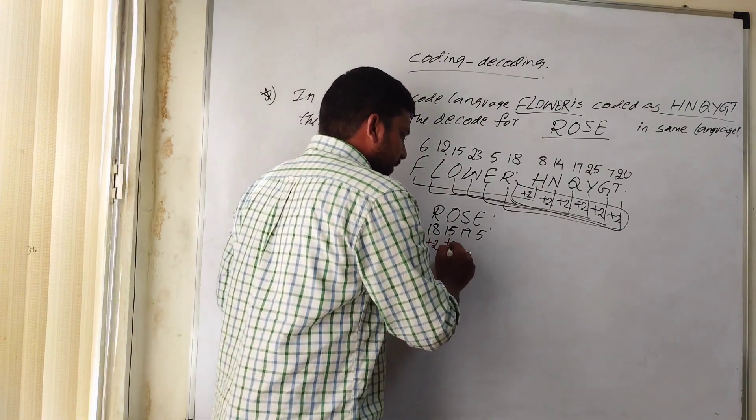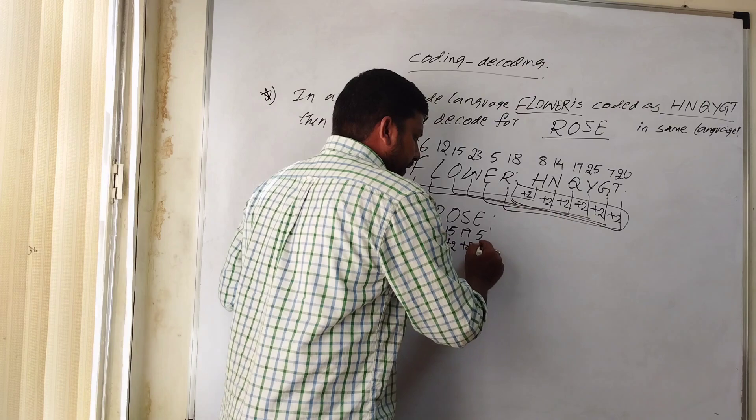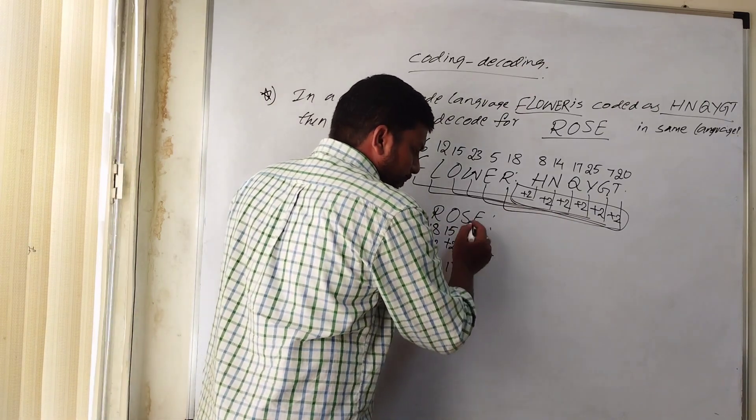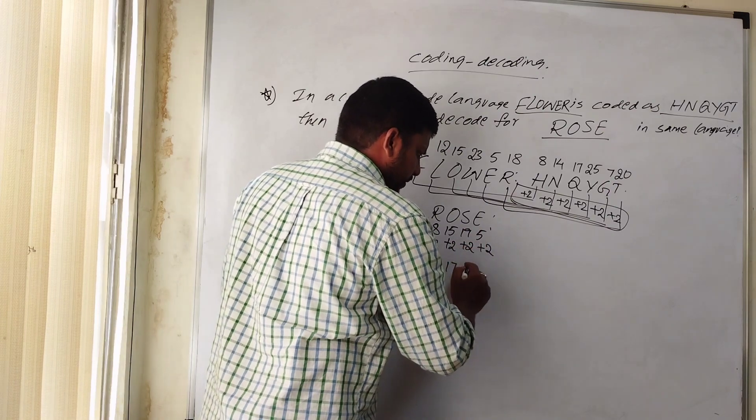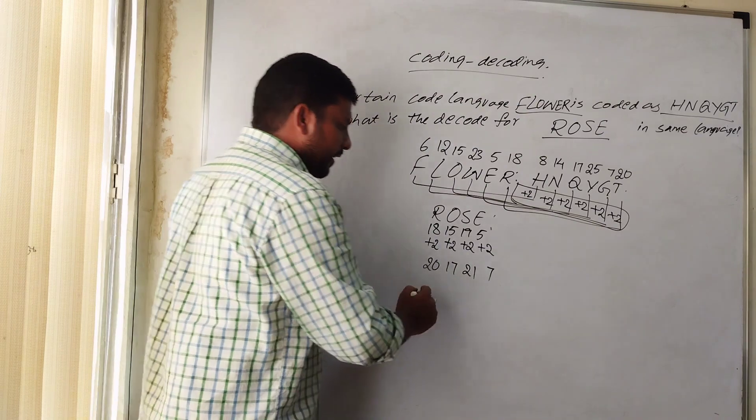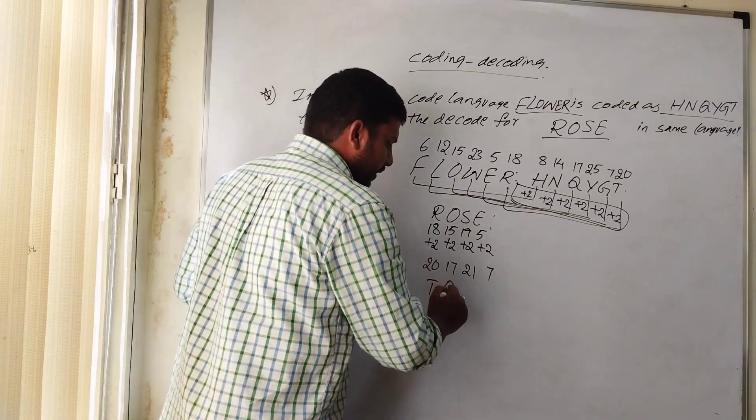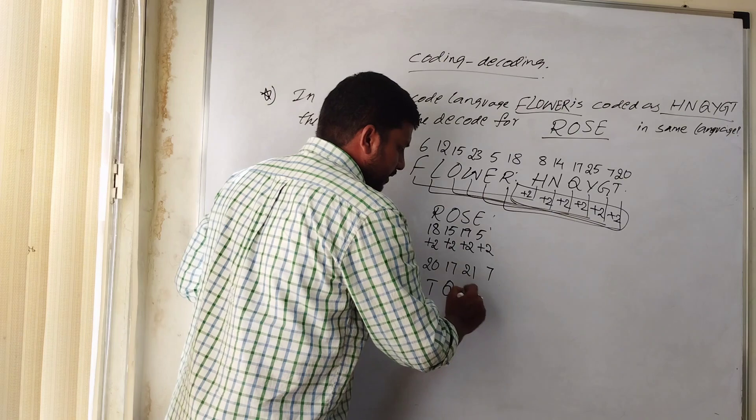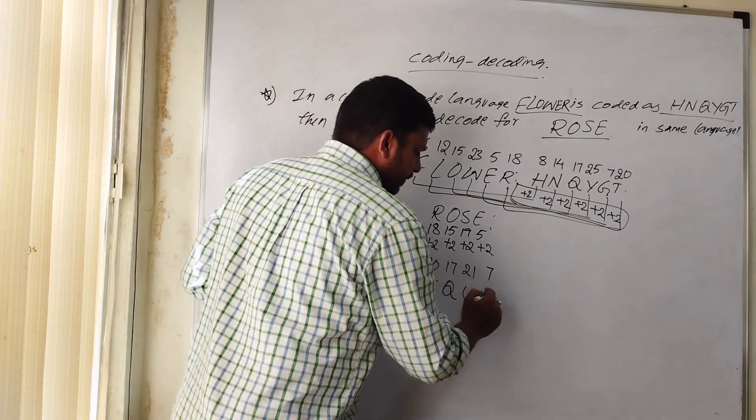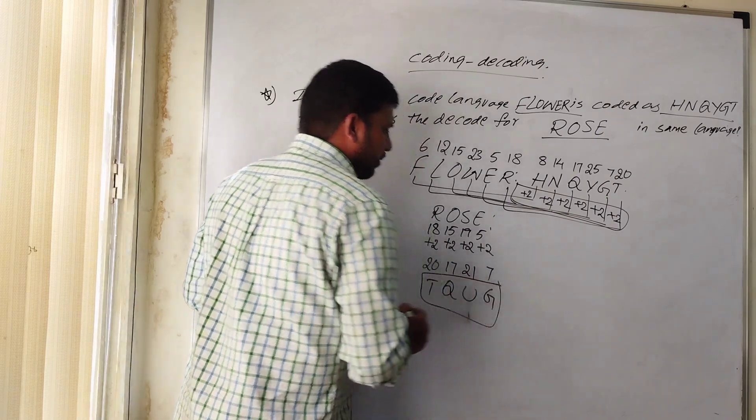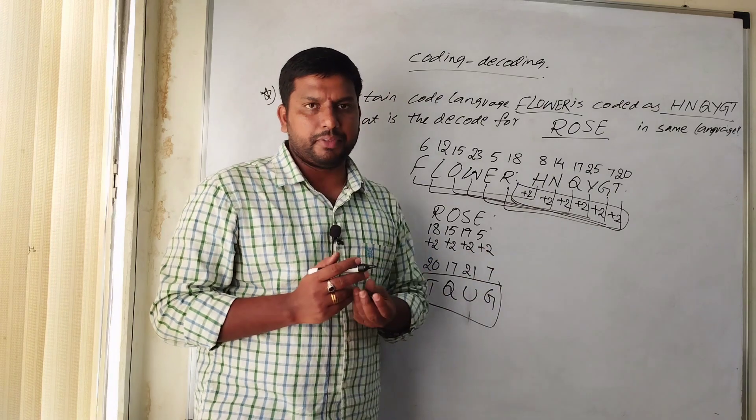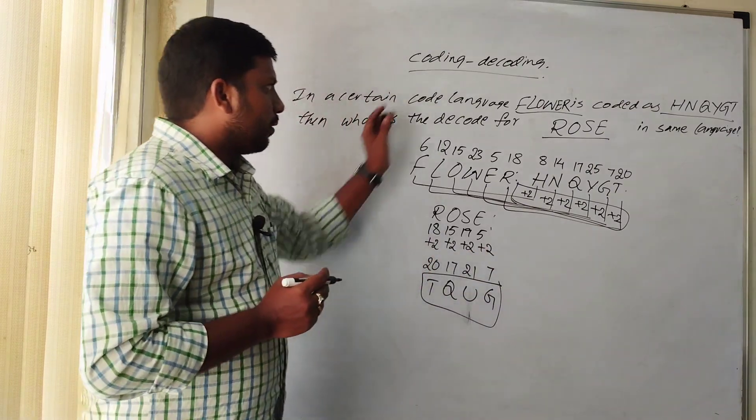18 plus 2 is 20, 15 plus 2 is 17, 19 plus 2 is 21, and 5 plus 2 is 7. So 20 is T, 17 is Q, 21 is U, and 7 is G. So in the same code language, Rose is coded as TQUG. This is a coding decoding topic.